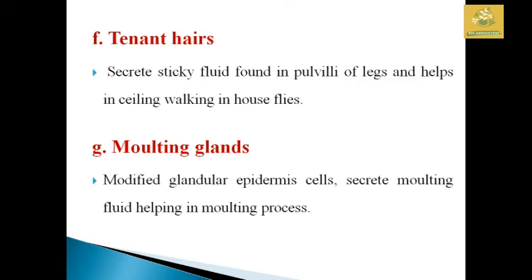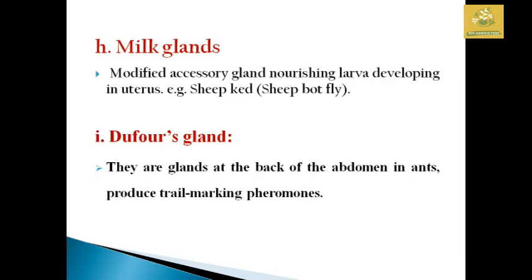The tarsal gland secretes sticky fluid found in the pheromone of the legs and helps in the ceiling-walking of house flies. The molting gland is present in the glandular epidermal cells of most larvae and produces molting fluid that helps in the molting process. The milk gland is a modified accessory gland used for nourishing larvae developing in the uterus of many insects — for example, sheep bot fly, which has a modified milk gland. The Dufour's gland is a gland at the back of the abdomen in ants, used for trail marking with pheromones.